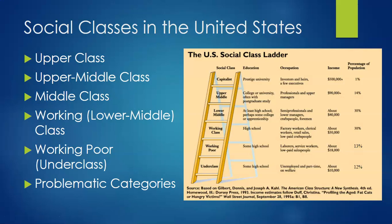It's difficult to draw exact lines between the social classes in the United States. In fact, it might be useful to imagine them as occurring along a continuum, rather than being strictly divided. The most commonly identified categories are upper class, middle class, and lower class. If we want to make even finer distinctions, the middle class can be divided into the upper middle, middle, and working, or lower middle class.